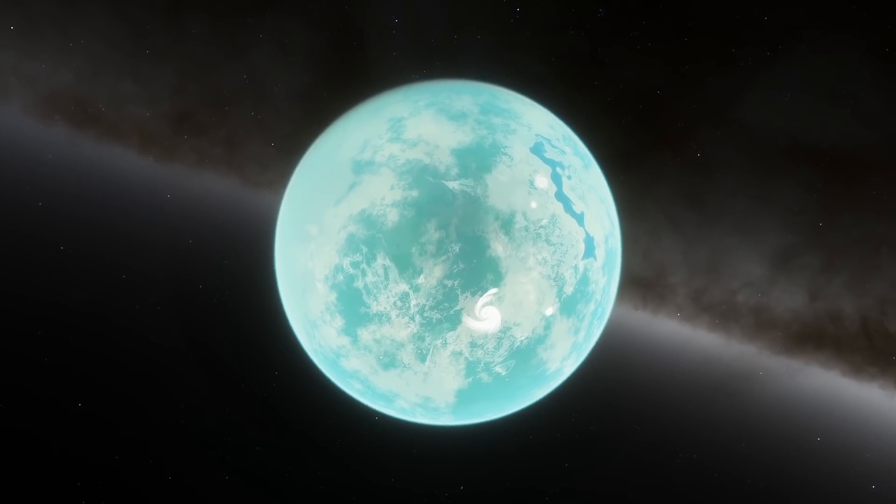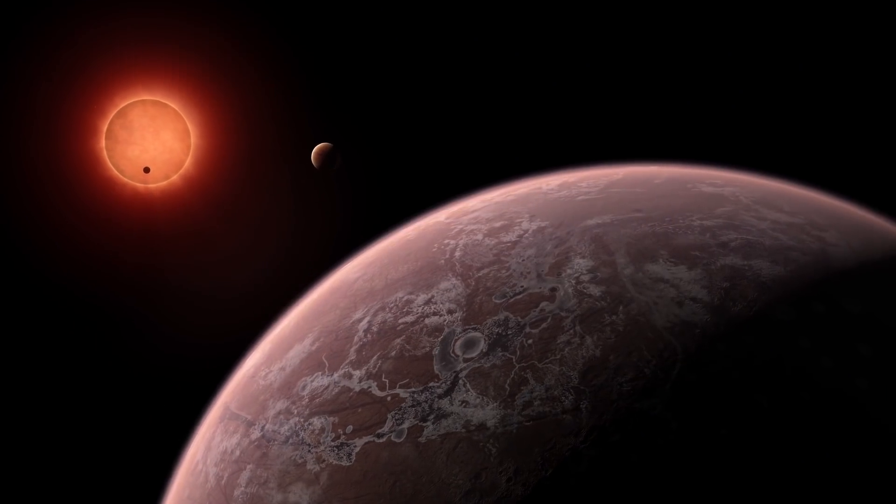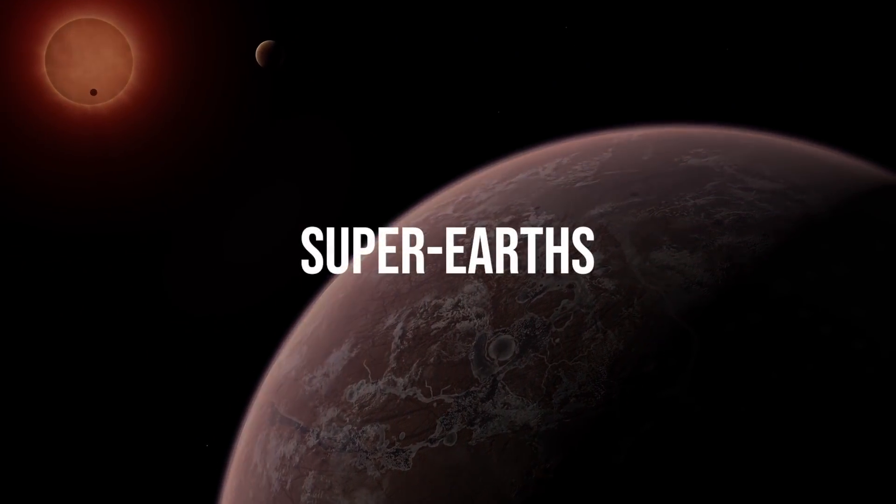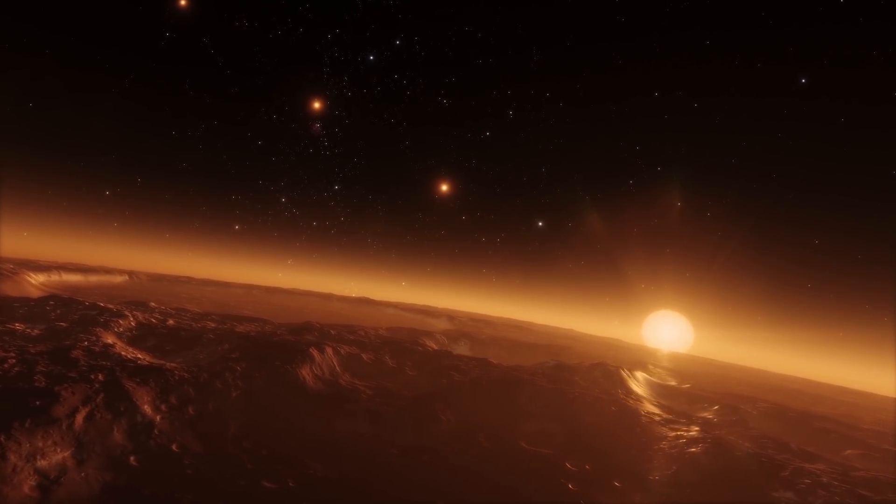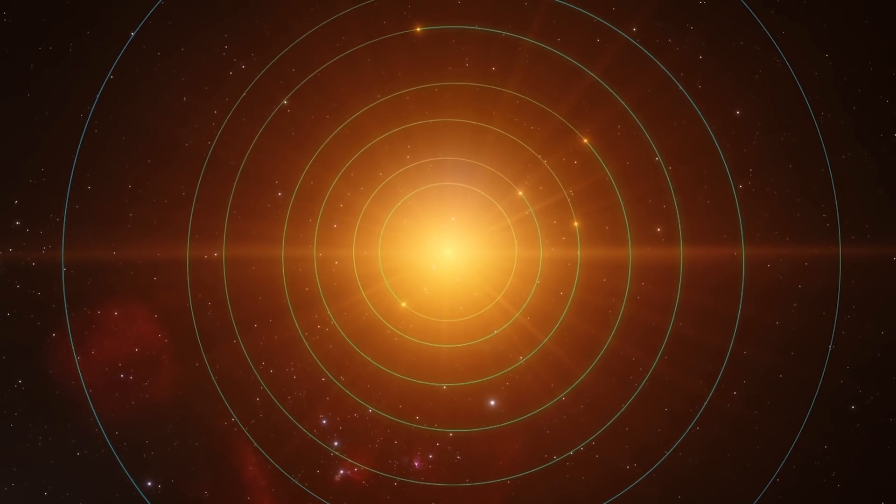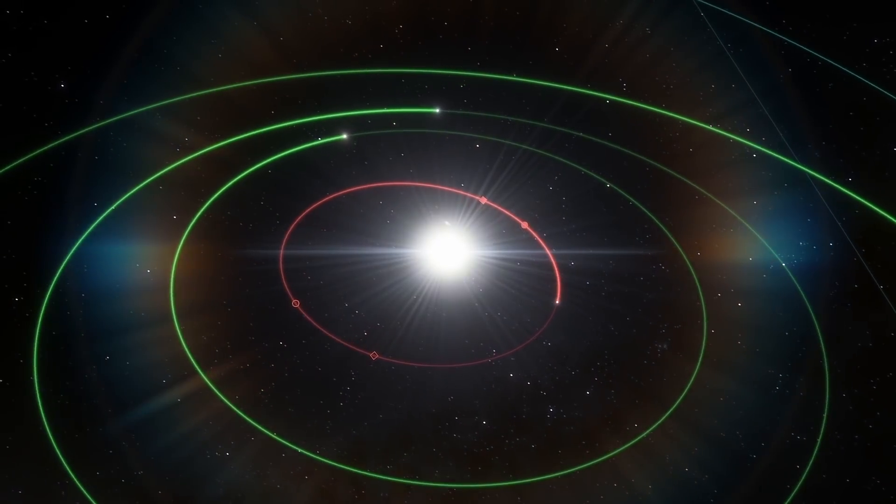Actually, the majority of rocky planets we can see around other stars are a few times bigger than the Earth. The so-called super-Earths. What's more, in many systems with a star similar to our Sun, orbits of several planets of this kind are tightly packed in the region where we've only got Mercury instead. The same goes for gas giants.